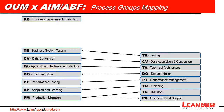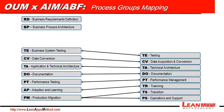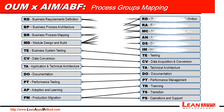The real difference happens with the first processes. Business Requirements Definition, Business Process Architecture, Business Process Mapping, and Module Design and Build for customizations are now split into six different processes at OUM. If you want to know those processes in detail, I suggest you watch the long version of this video.